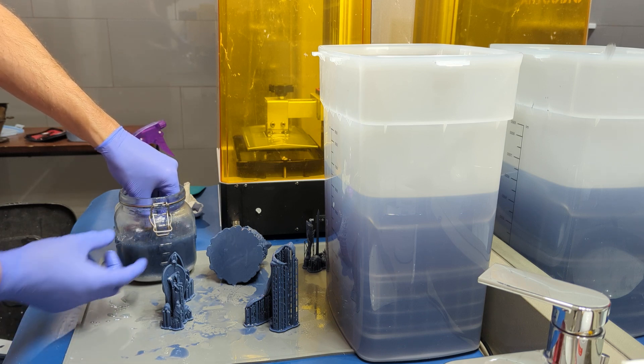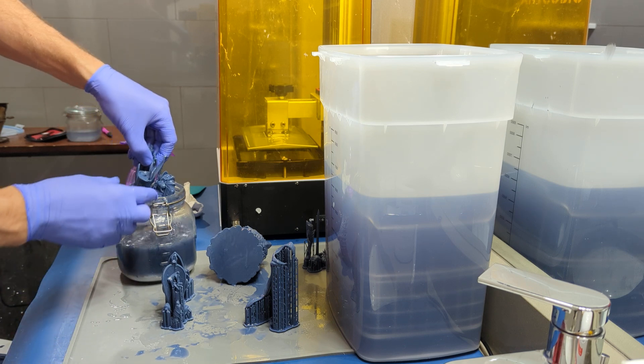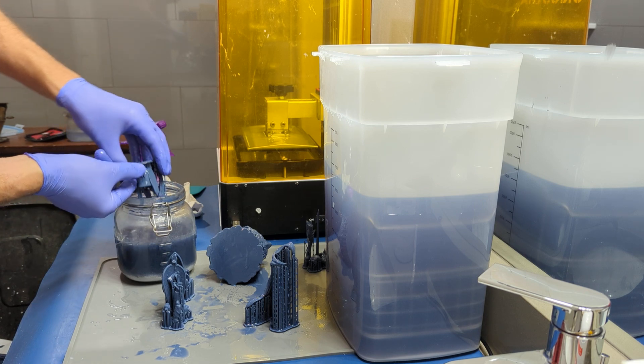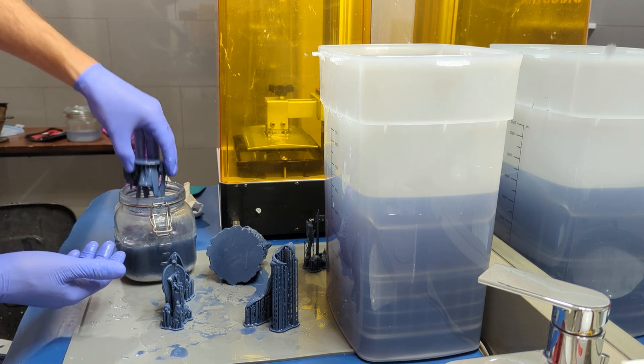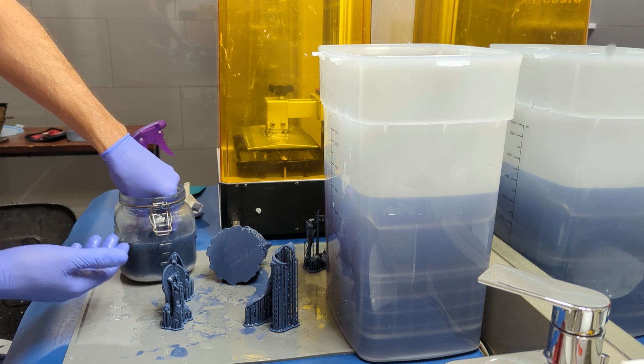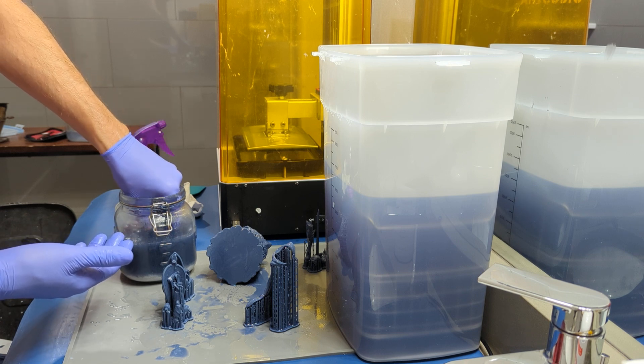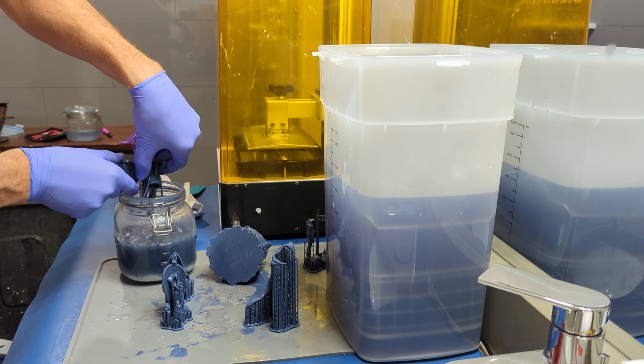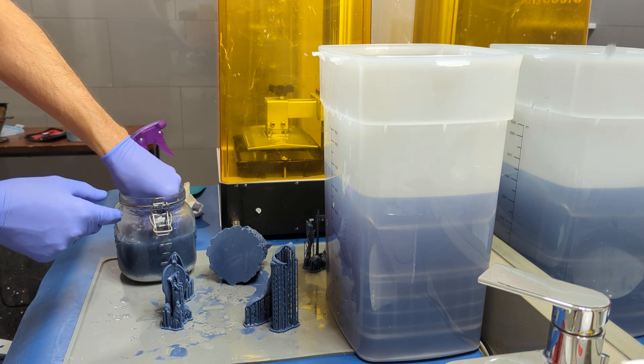If I've got a print that's hollow, I like to keep dunking it until the resin that comes out of the hollow print is the same color as the IPA. So I can see if it's like a darker gray, that means I'm still rinsing a lot of resin from the hollow print. Stuff I don't want in this wash.